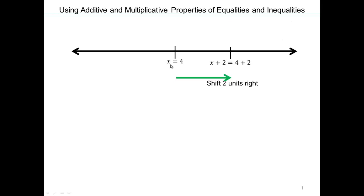Since we added 2 to x and to 4, both x and 4 that were sitting on this tick mark are now sitting 2 units away, but they're both sitting on the same tick mark again. This is the tick mark where x plus 2 is sitting, and also 4 plus 2, or 6, is sitting — both 2 units away. What do you think will happen if you subtract 2 from both sides? Do you think we'll still get something similar?